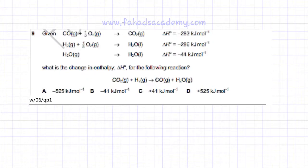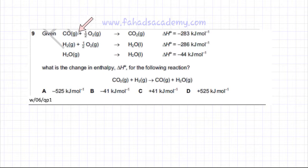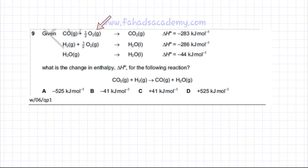This chemical energetics question requires you to draw a Hess cycle. The information provided is the enthalpy change for the combustion of carbon monoxide: CO reacts with oxygen to produce CO₂, and the enthalpy change for this reaction is minus 283 kilojoules per mole.